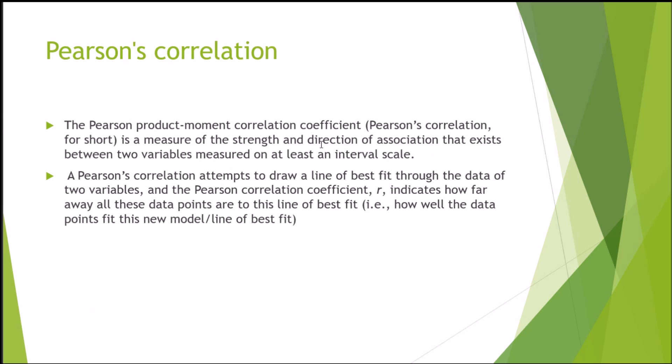To start off with, let's go on to Pearson's correlation. The Pearson's product moment correlation coefficient, also more simply known as Pearson's correlation, is a measure of the strength and direction of association that exists between two variables that are measured on at least an interval scale. Pearson's correlation attempts to draw a line of best fit through the data of two variables, and the Pearson's correlation coefficient, symbolized by R, indicates how far away all these data points are to this line of best fit.